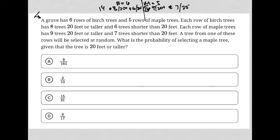So there are 16 trees per row for maple and 14 trees per row for birch, eight of which are 20 feet or taller and six of which are shorter than 20 feet. And there are 16 trees per row of maple, nine of which are 20 feet or taller and seven of which are shorter than 20 feet.